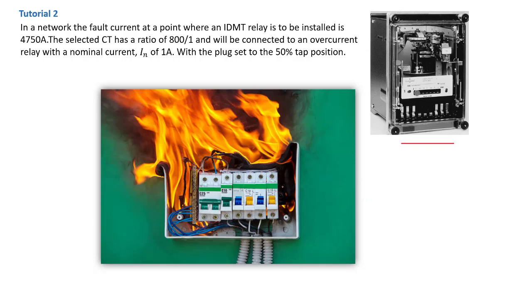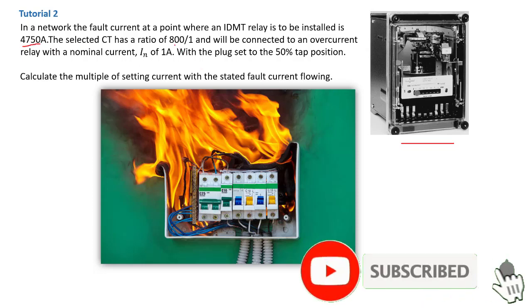This is a distribution box, but this could be bigger if it happened in a transmission or distribution substation. This tutorial is very similar to the previous one, tutorial 1, where we were also asked to calculate the multiple of setting current with the stated fault current flowing. Here, the stated fault current has changed, and also the current transformer ratio has changed.